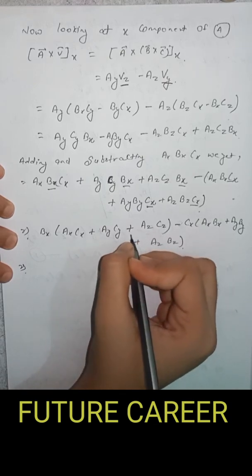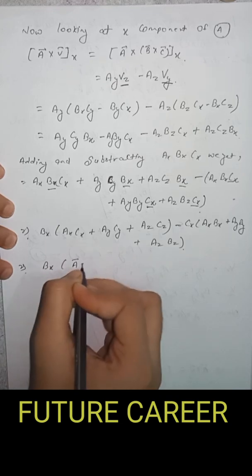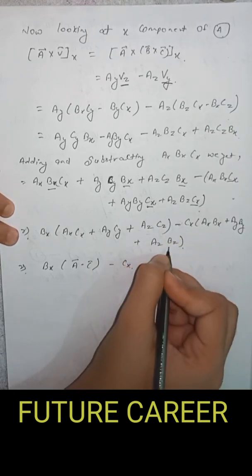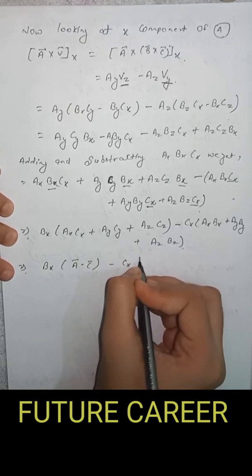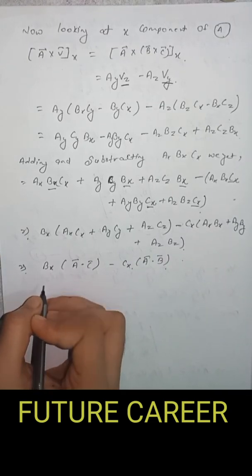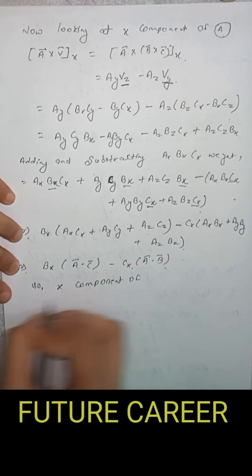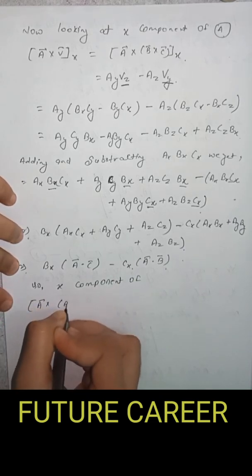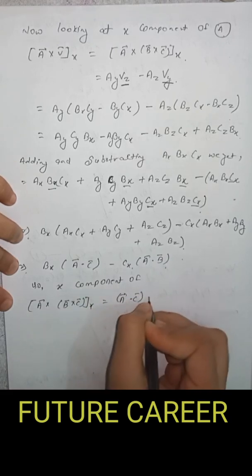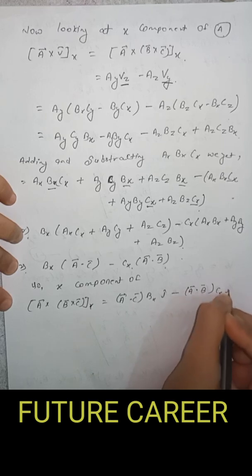We recognize that Ax Cx plus Ay Cy plus Az Cz is A vector dot C vector, and Ax Bx plus Ay By plus Az Bz is A vector dot B vector. So the X component of A cross B cross C equals A dot C into Bx i cap minus A dot B into Cx i cap.